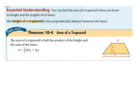Sorry for the delay with this video, but let's get this going. So here's the idea: you can find the area of a trapezoid if you know the height, which is the vertical height at a 90-degree angle, perpendicular to the bases, which are parallel. And you know the length of the bases. The height of the trapezoid is the perpendicular distance between the bases, and the area is one half the product of the height and the sum of the bases.